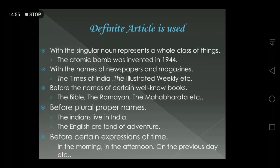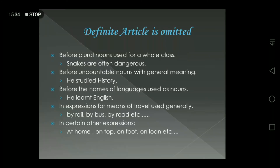Rule ten: before names of certain well-known books — like the Bible, the Ramayana, the Mahabharata, and so on. Rule eleven: before plural proper names — for example: 'The Indians live in India', 'The English are fond of adventure.' Here 'the Indians' refers to the people of India, and 'the English' means the people of England, not the subject English. Rule twelve: before certain expressions of time — like in the morning, in the afternoon, on the previous day.